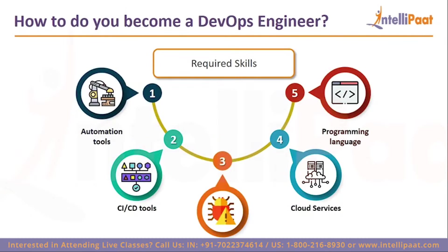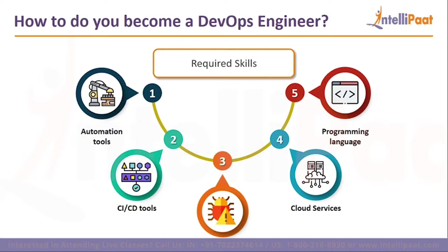Once done with a programming language, the next skill to learn is cloud. The three cloud services most frequently asked about are AWS, Azure, and GCP. AWS is the most popular among companies you'll apply to, so it's better to learn AWS first, then Azure, then GCP — that's the order of popularity. When you start with AWS, most of the concepts you learn will carry over to Azure and GCP.